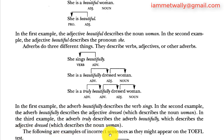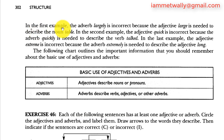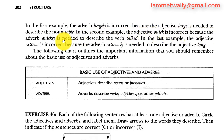The following are examples of incorrect sentences as they might appear on the TOEFL test. 'They were seated at a largely table' — the adverb largely is incorrect; the adjective large is needed to describe the noun table. 'The child talked quick to her mother' — the adjective quick is incorrect; the adverb quickly is needed to describe the verb talked. 'We read an extreme long story' — the adjective extreme is incorrect; the adverb extremely is needed to describe the adjective long.